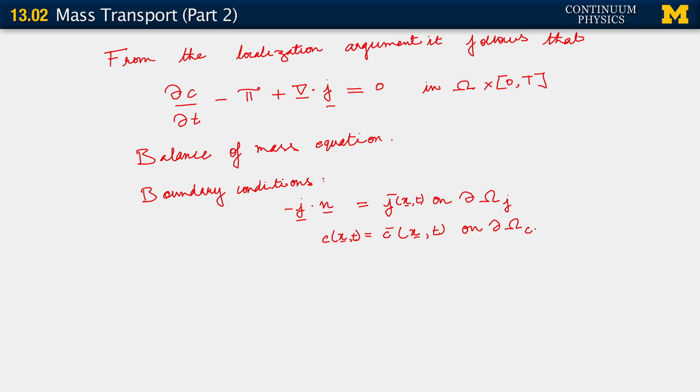All right. The other thing we need here is we also need some other condition in order to solve this problem. Can you think of what that is? What other condition do we need to completely specify this problem? We need an initial condition because we have a time derivative here. We have a single time derivative on the concentration. Therefore, we need one initial condition. And that initial condition is just the initial value of the concentration as a field over the domain of interest.